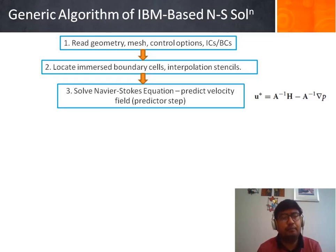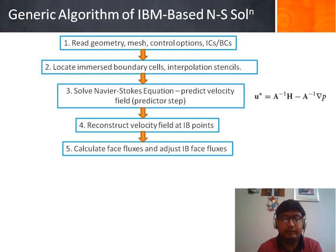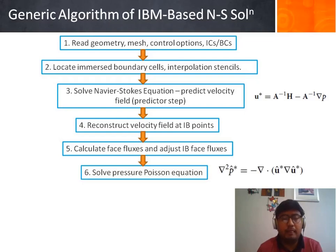After that the PISO loop starts where the first step is the predictor step. To solve the Navier-Stokes equation, the velocity field is predicted which is denoted here as U star, and then the velocity is reconstructed at the IB points. Then the phase fluxes are calculated and the IB phase fluxes are adjusted.